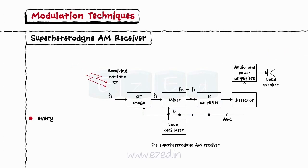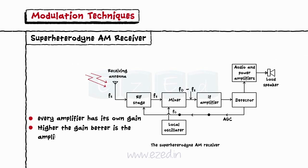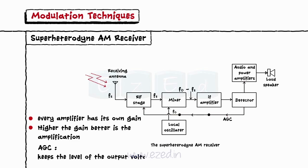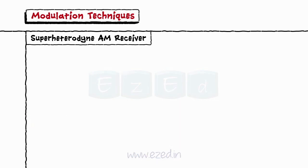Automatic Gain Control (AGC): Every amplifier has its own gain — the higher the gain, the better the amplification. The AGC circuit controls the gains of the RF and IF stages. This keeps the level of the output voltage constant even if the input signal at the receiving antenna fluctuates.